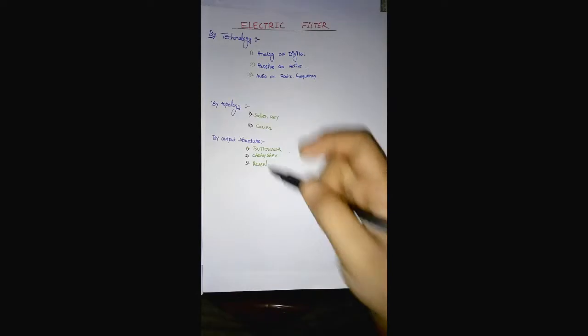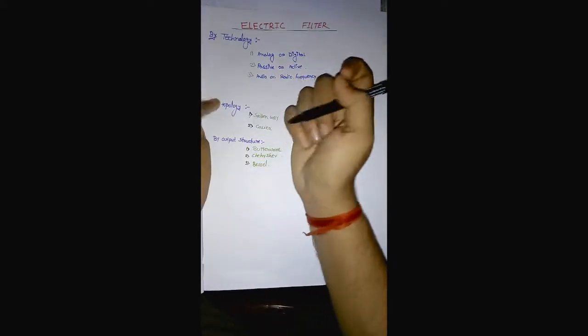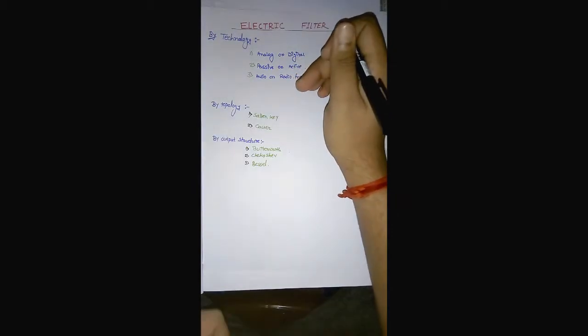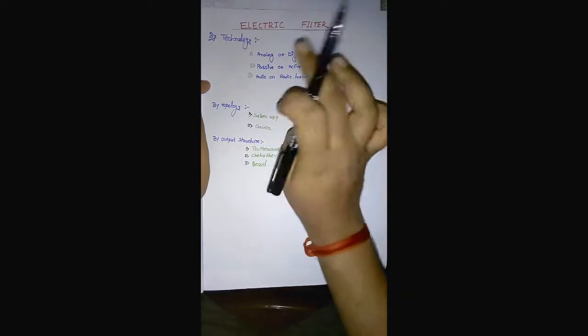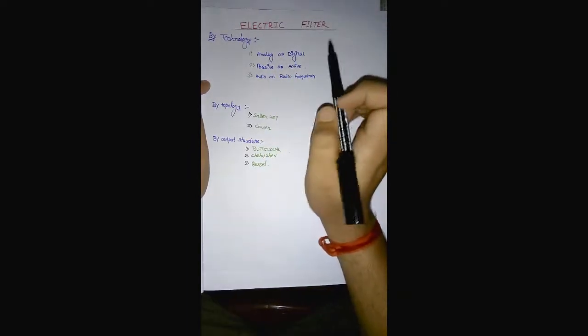Hello, today I will discuss about electronic filters, which is important for first-year students. Technologically, filters can be divided in various ways: analog or digital, passive or active, audio or radio frequency. Analog filters are designed to process analog signals.